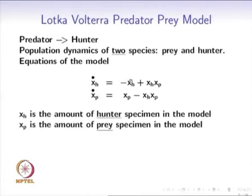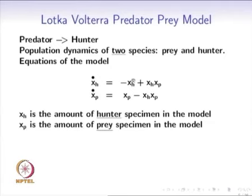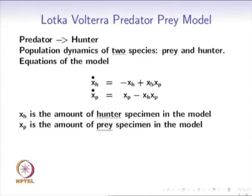The first term in each equation describes how the particular species would evolve if there were no other species. The first equation says that if there were no prey (xp equal to 0), then xh would decrease exponentially because there is no food. Left to itself, the hunter species would just decrease. But for each interaction between xh and xp, the hunter eats the prey, causing an increase in the hunter population.